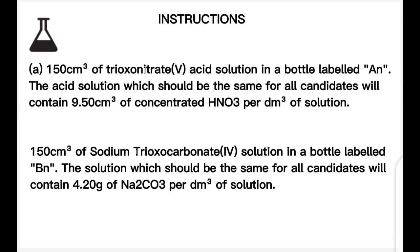Here are the instructions. It says: 150 cm³ of trioxonitrate(V) acid solution in a bottle labeled AN. The acid solution, which should be the same for all candidates, will contain 9.50 cm³ of concentrated HNO₃ per dm³ of solution. Then 150 cm³ of sodium trioxocarbonate(IV) solution in a bottle labeled BN, which should be the same for all candidates.